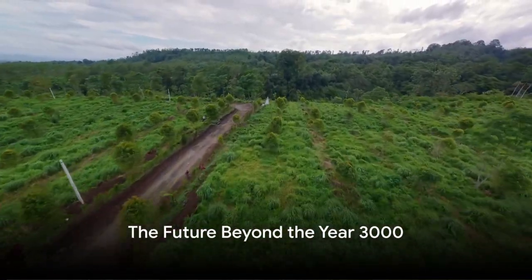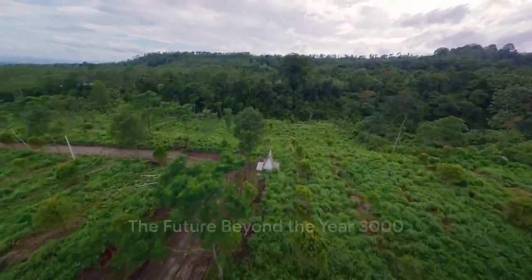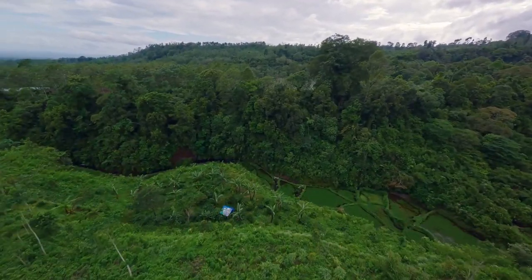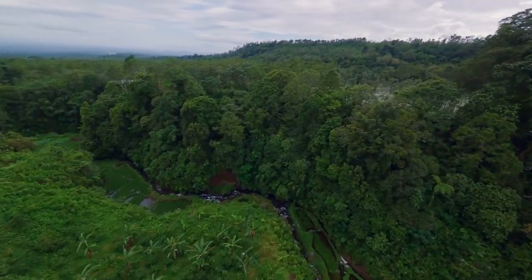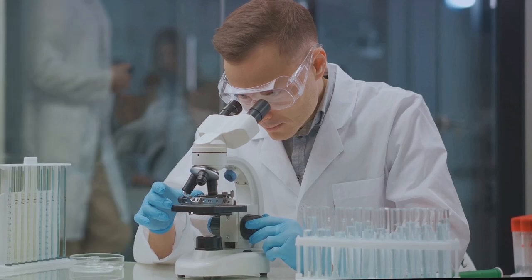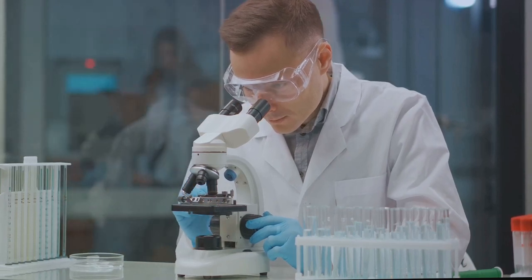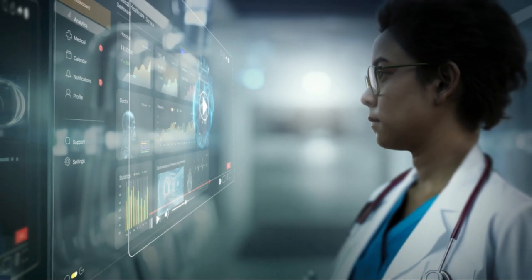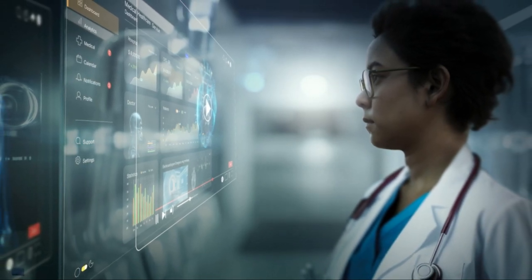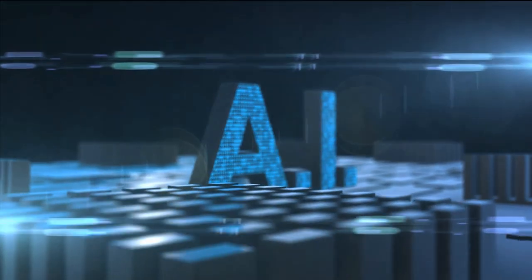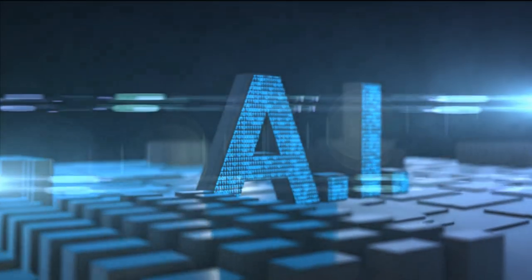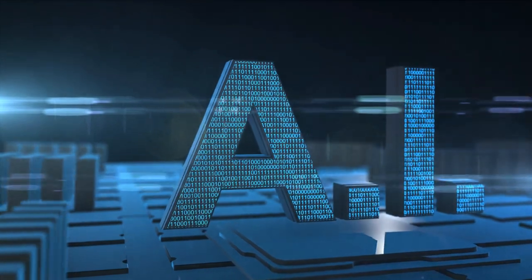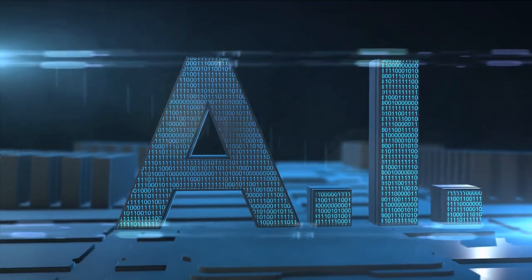In summary, the future beyond the year 3000 could see a radically transformed world ecosystem, with climate change reshaping the Earth's landscapes and biodiversity. Human evolution could take a directed course, with genetic engineering creating a new era of post-humans. Artificial intelligence could become an integral part of everyday life, transforming industries from healthcare to education, while general technology could become so advanced that it integrates seamlessly into our very existence.